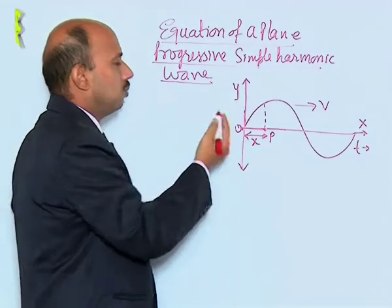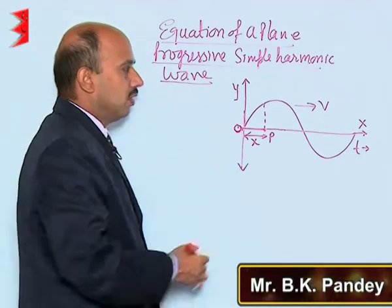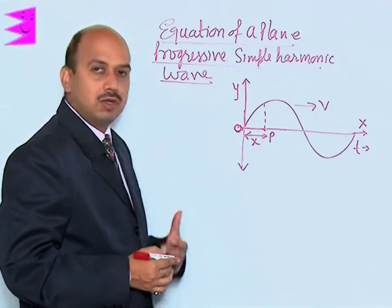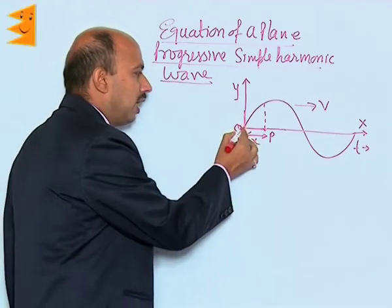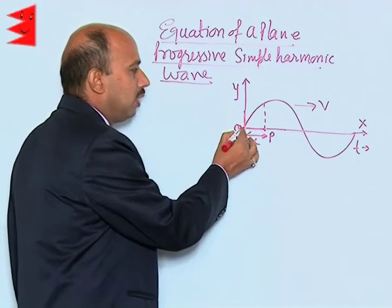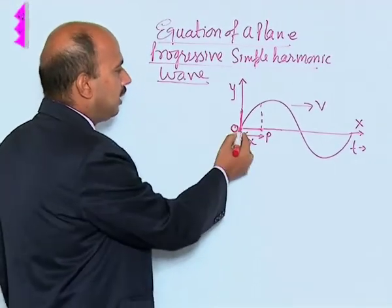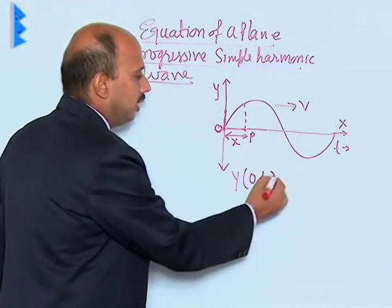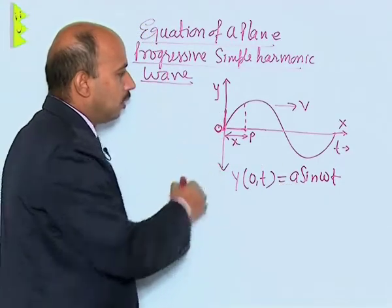Now we see the equation of a plane progressive simple harmonic wave. Suppose a wave is starting from the origin and travelling in the positive direction of x with speed v. This wave propagates due to the repeated periodic vibration of the particles of the medium about their mean position. Consider the particle at the origin vibrating about its mean position, initially going upward in the positive direction. The displacement at any time t of this particle is y(0,t) = a sin(ωt), where a is the amplitude of the oscillating particle.